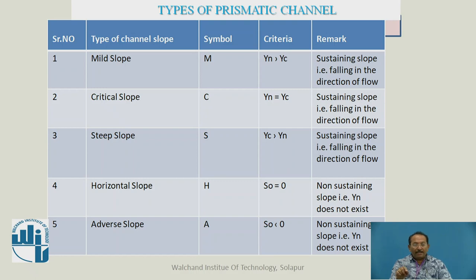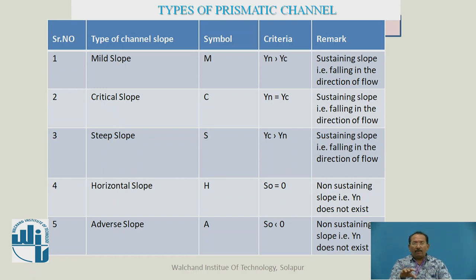For steep slope, it is the opposite of mild — critical depth Yc is greater than normal depth Yn — and it is also sustaining, falling in the direction of flow. For horizontal slope, S0 equals zero, meaning the channel bottom is totally horizontal, so it is non-sustaining. We are now going to study about zones: how the depth of water moves from zone 1 to zone 2 to zone 3.